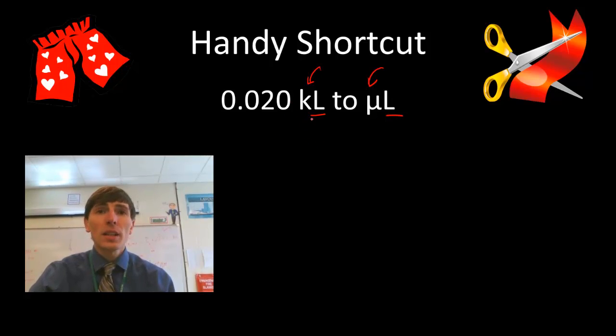So the shortcut goes like this. What you can do is you can look at the prefix of the number in question, kilo. Kilo stands for 10 to the third. And we're converting to microliters. This micro stands for 10 to the negative 6.